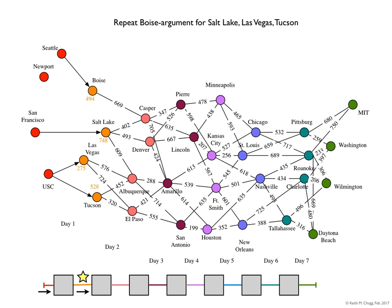Now let's repeat this and condition on Casper at the end of day two. We need to find the best path from the west coast to Casper, and we can tell that it has to come from either Boise or Salt Lake. We only need to consider the two paths which are extensions of the arrowed paths, and we add on the one-day mileage for each. If it came from Boise it would be 494 plus 669; if it came from Salt Lake it would be 748 plus 402. We compare those two sums and choose the smaller — 748 plus 402 is smaller than 494 plus 669, so Boise loses out. The shortest path from the west coast to Casper is San Francisco, Salt Lake, Casper, at 1,150 miles.